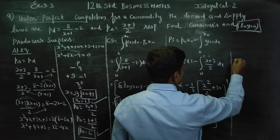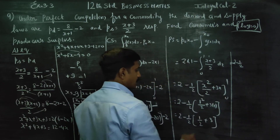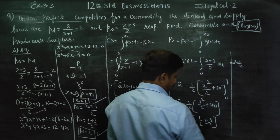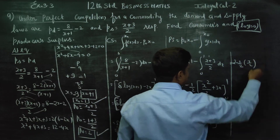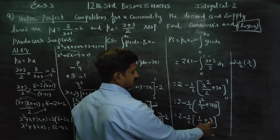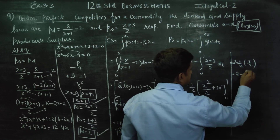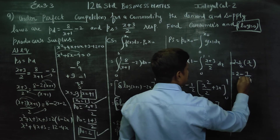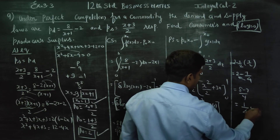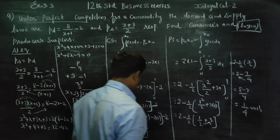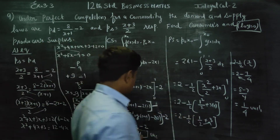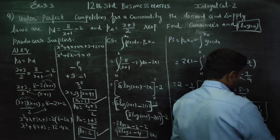Therefore, 2 minus 1/2. Cross multiplying: 2 threes are 6. So 6 plus 1 is 7 by 2. Again cross multiplying: 8 minus 7 by 4. The answer is 1/4 units. Either 1/4 units or 8 log 2 minus 4 units — this is your producer surplus and this is your consumer surplus.